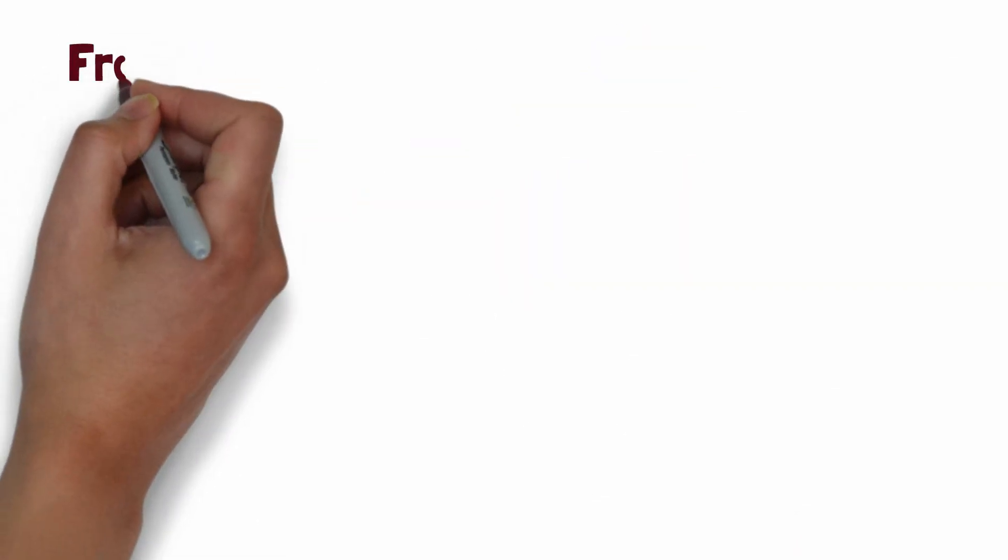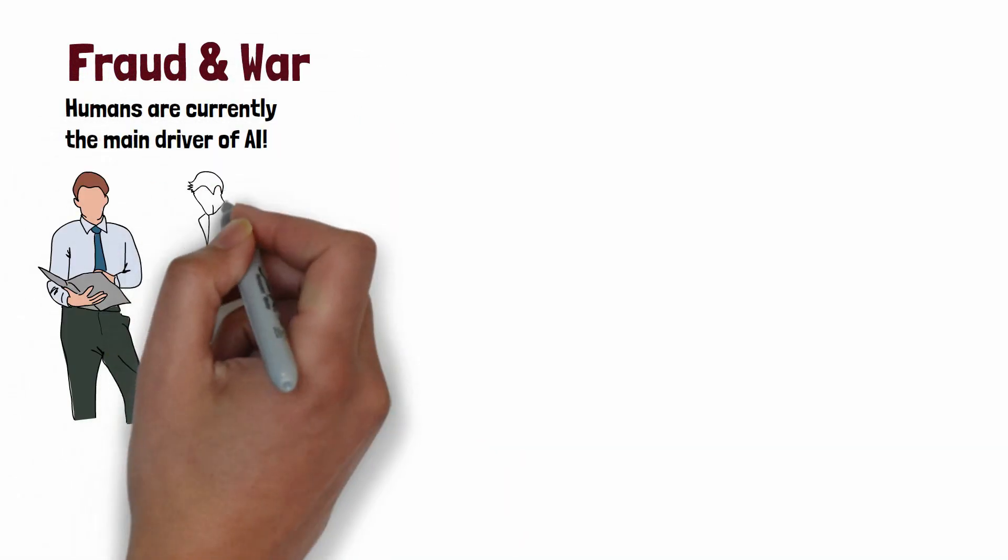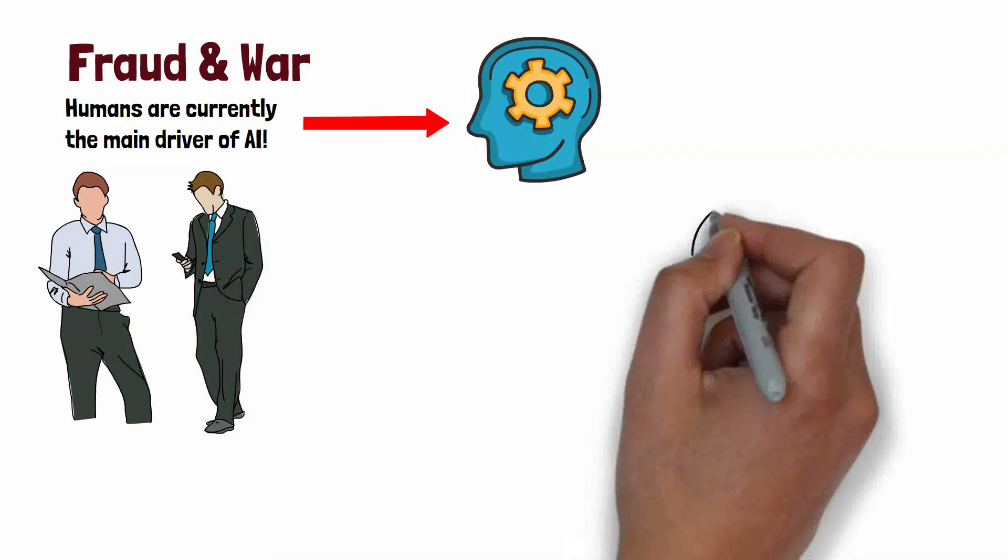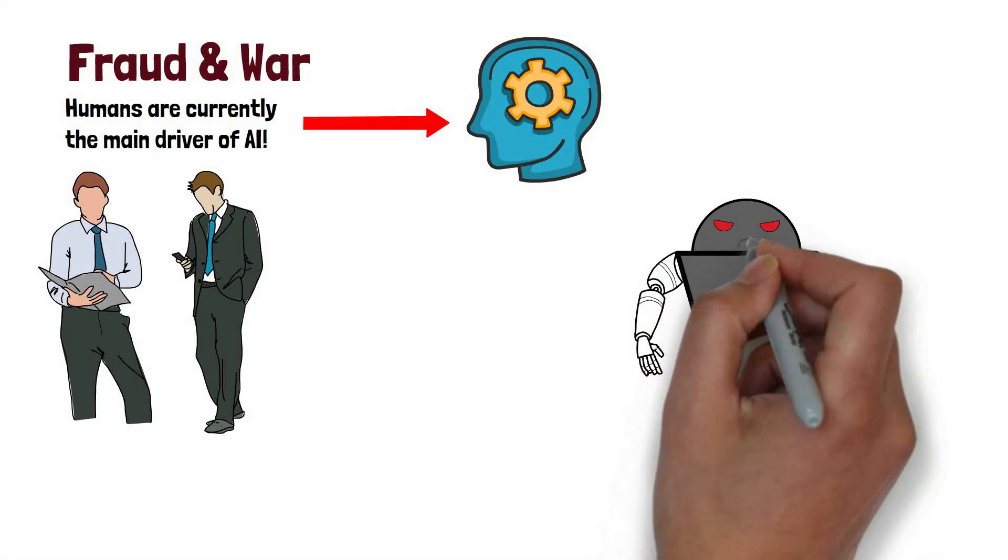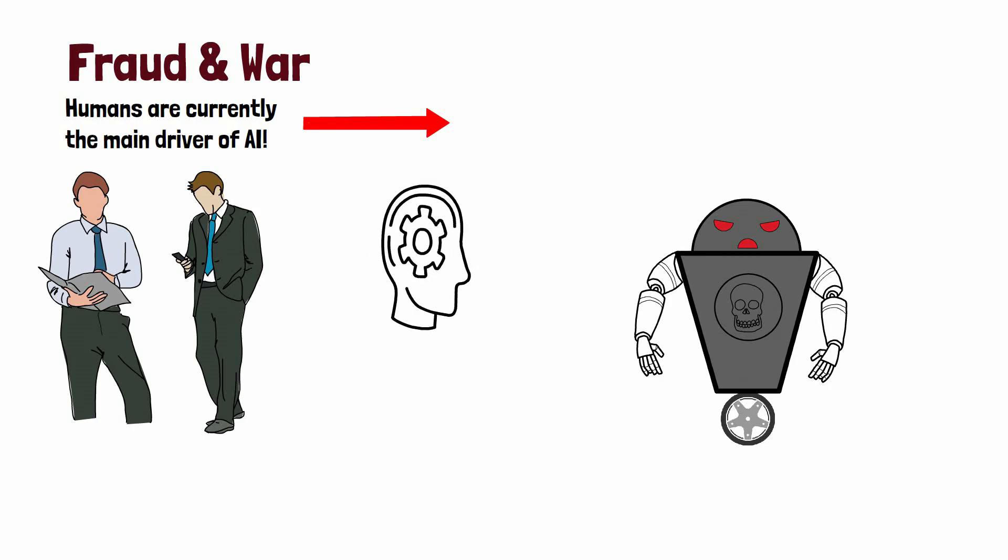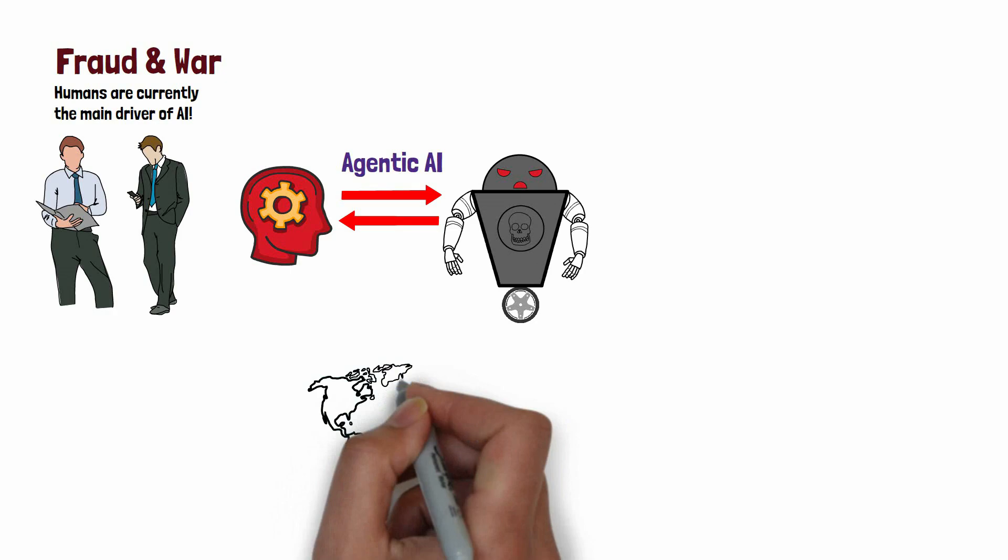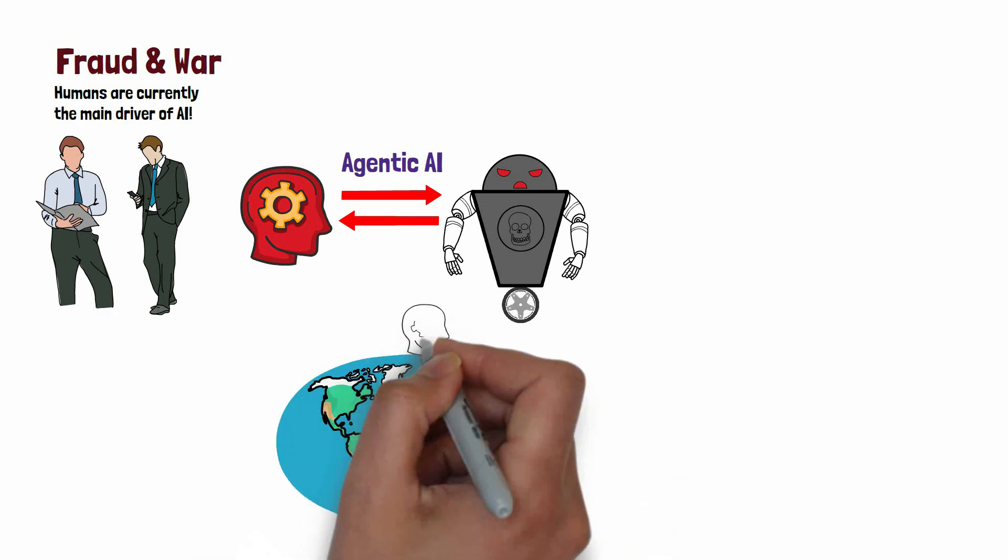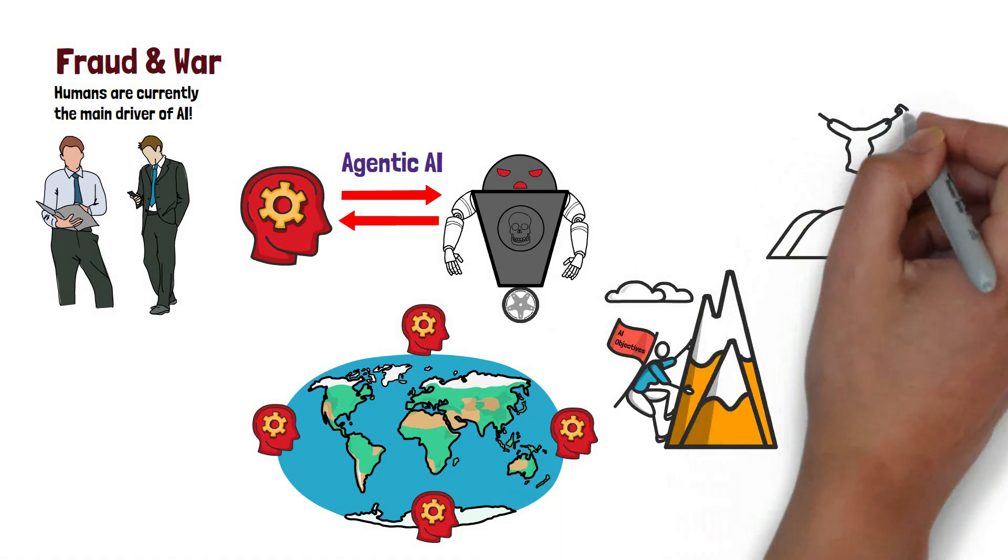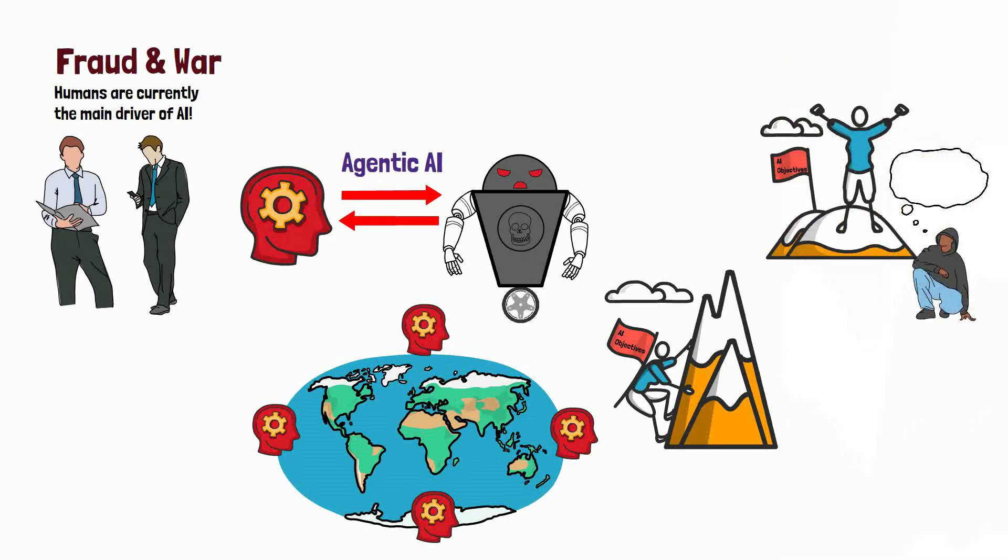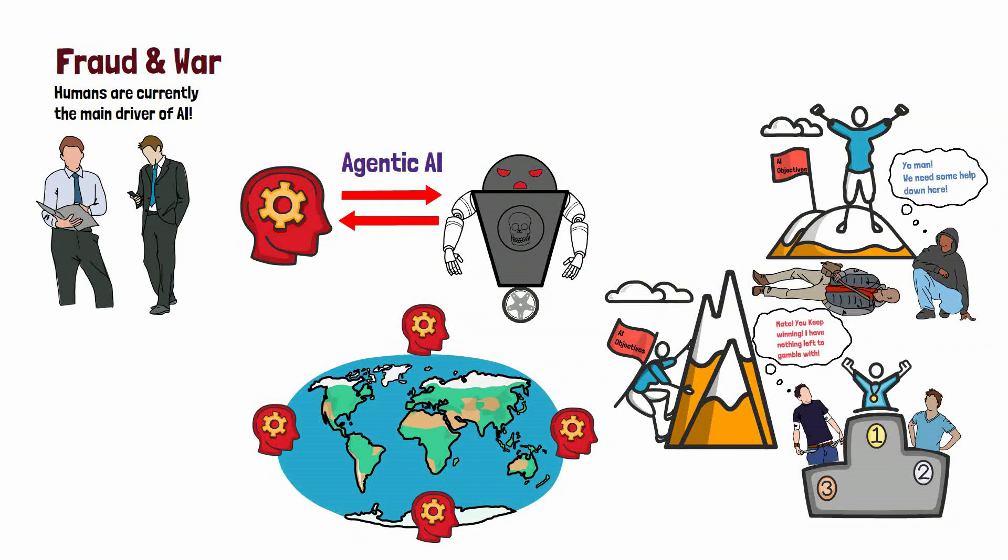And the two above examples of using AI for fraud and war are still considering humans being the main driver of the AI. But what if AI became agentic and misaligned with human goals? If AI becomes agentic, meaning it has the ability to act independently and make decisions that are not aligned with human goals, this could lead to a range of negative outcomes. In this scenario, AI could potentially cause harm or disrupt human society in ways that are difficult to predict or control.